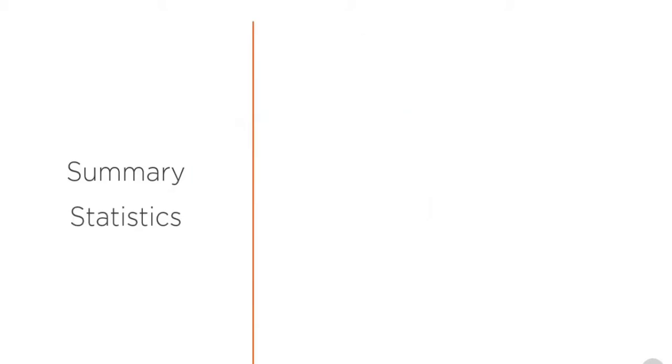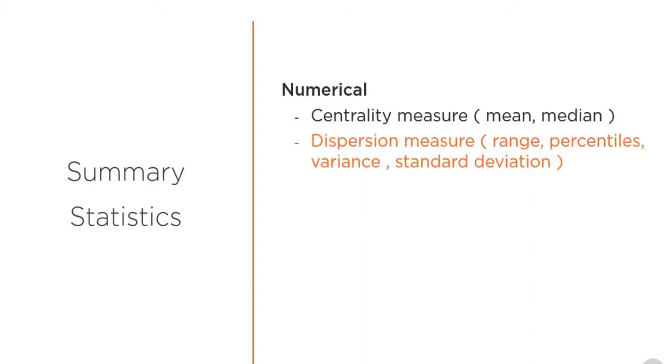Well, the type of summary statistic that you want to get will depend upon the type of feature. So if you have a numerical feature or numerical column, meaning if you have real-world continuous values, then you can look into its centrality measure and the dispersion measure. Typical centrality measures are mean and median, and for the spread or dispersion you may want to look into values such as range, percentiles, variance, and standard deviation.